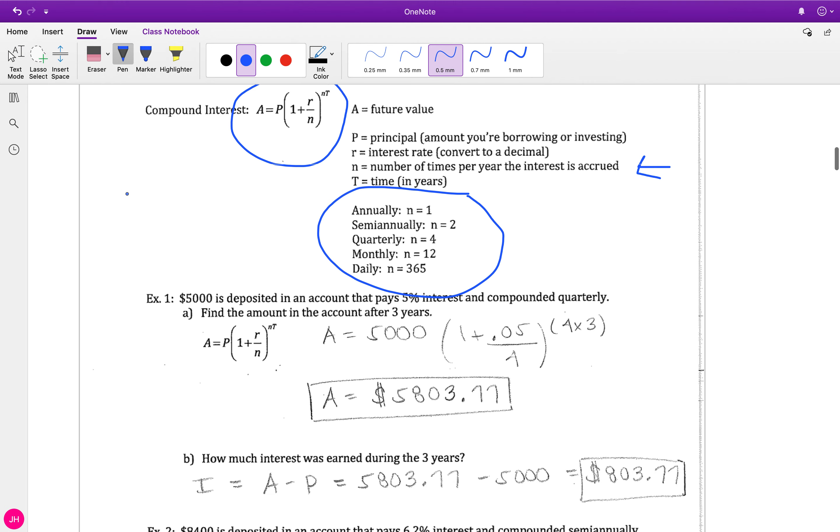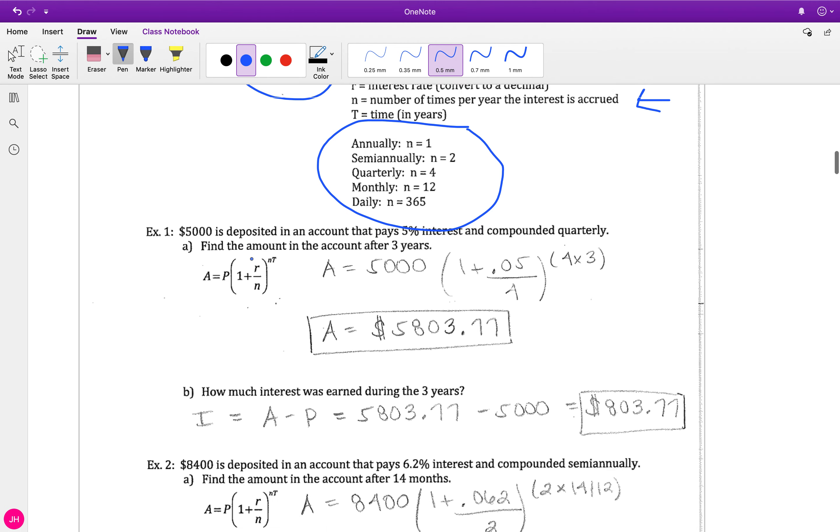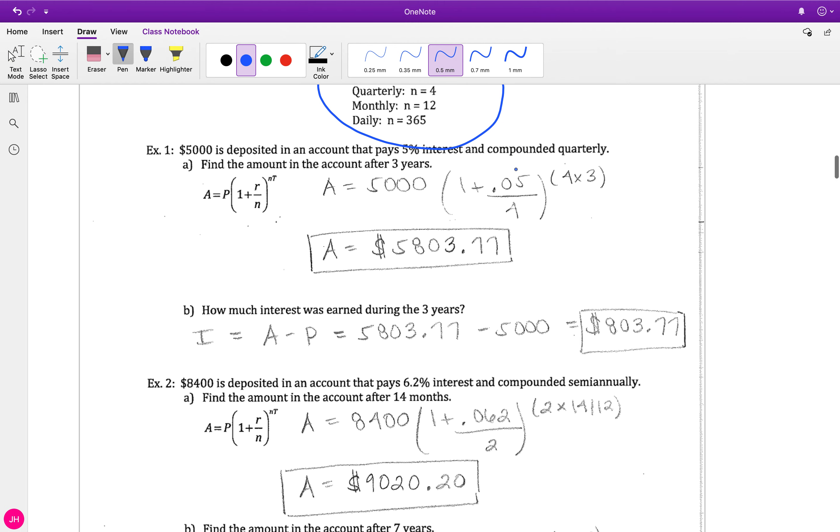Compounding interest, which is what this formula is, recalculates our interest every single compounding period. So maybe every single month, or in this first example every quarter, they see how much we owe or how much money we have in the account, and they calculate the interest based on that. So the interest changes with each one of these compounding periods. That's the reason we have to have two different formulas.